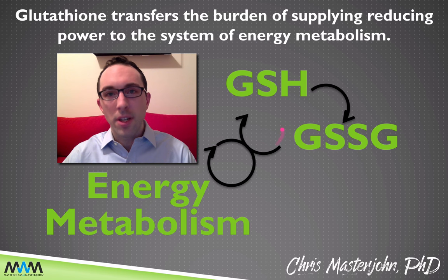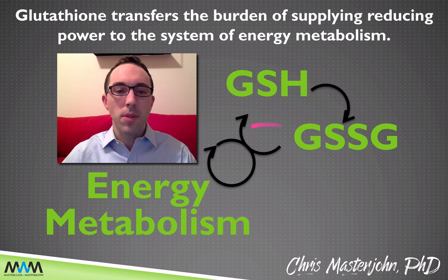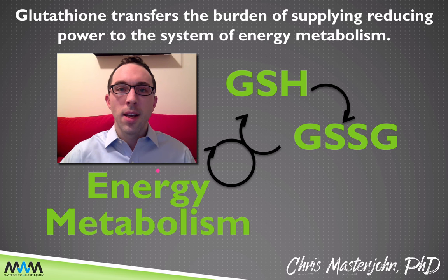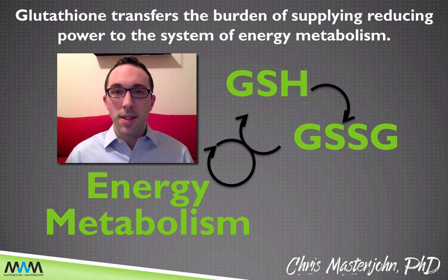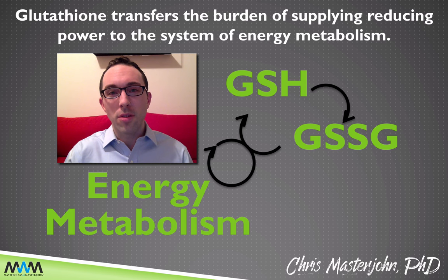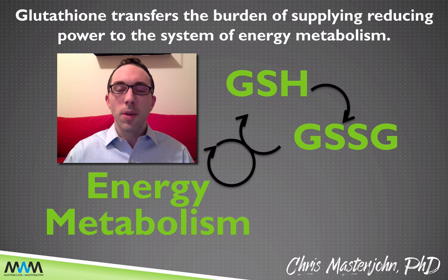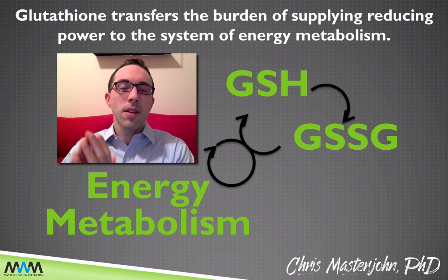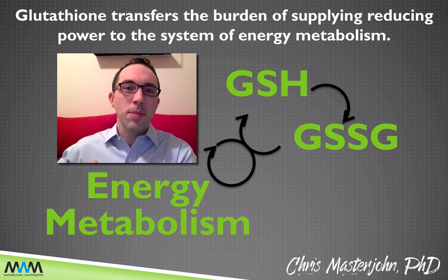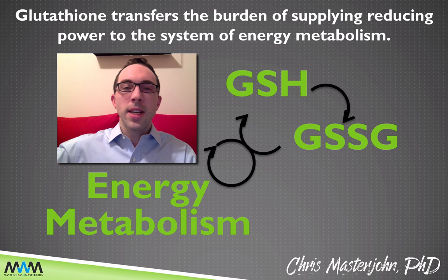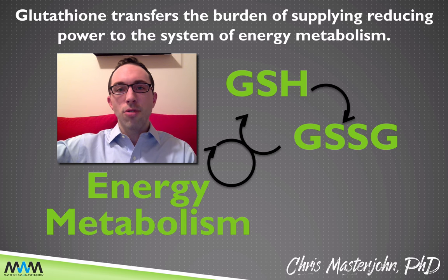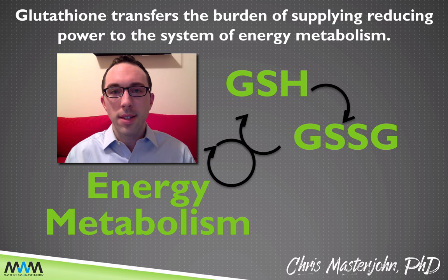Glutathione is going to take the burden of supplying reducing power and place it on the system of energy metabolism, so that ultimately hydrogen ions and electrons — meaning reducing power — are coming from food molecules, particularly glucose, with the help of B vitamins, brought to glutathione. Glutathione can bring it to vitamin C. Vitamin C can deliver it to vitamin E. Vitamin E can use it to neutralize lipid peroxyl radicals in the cellular membrane.